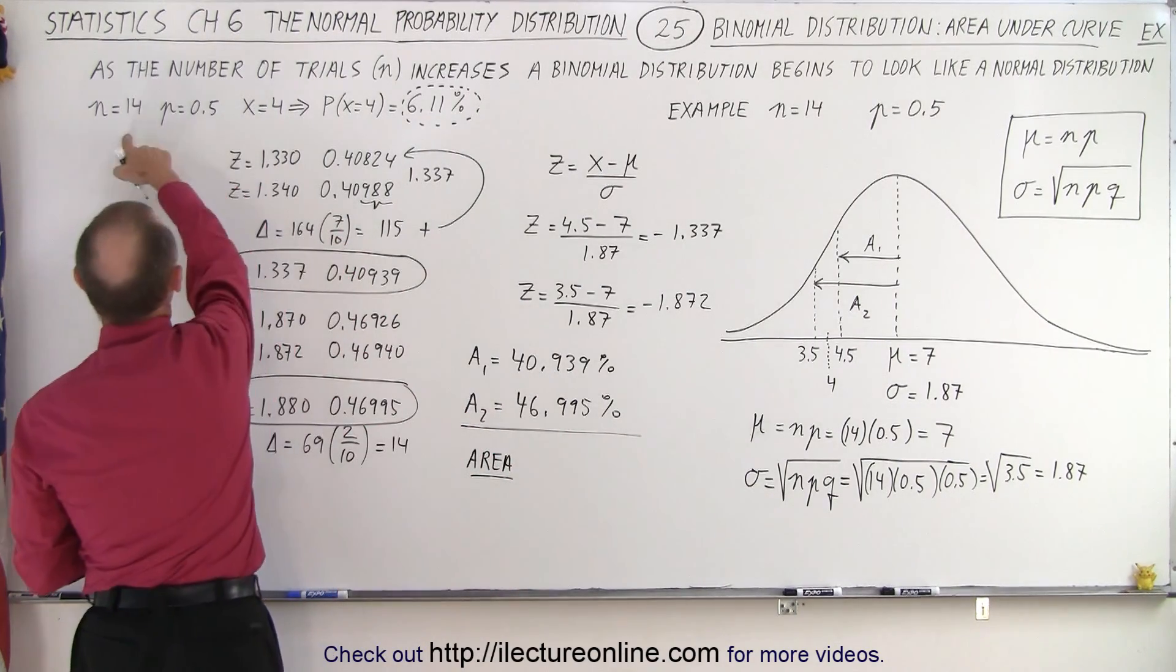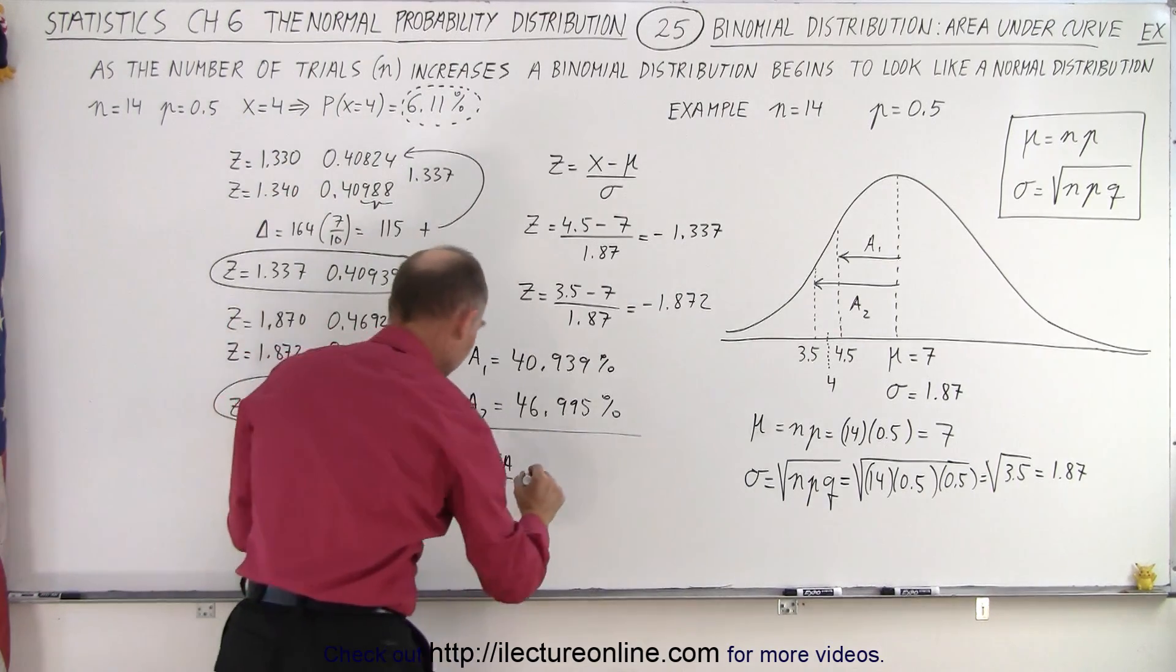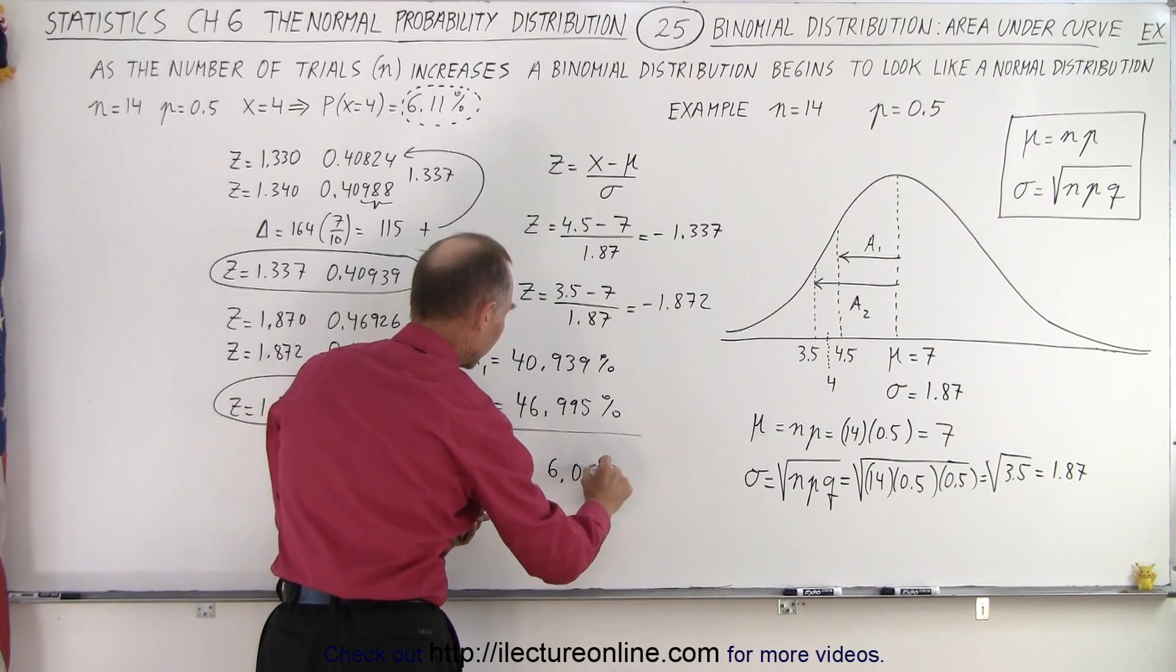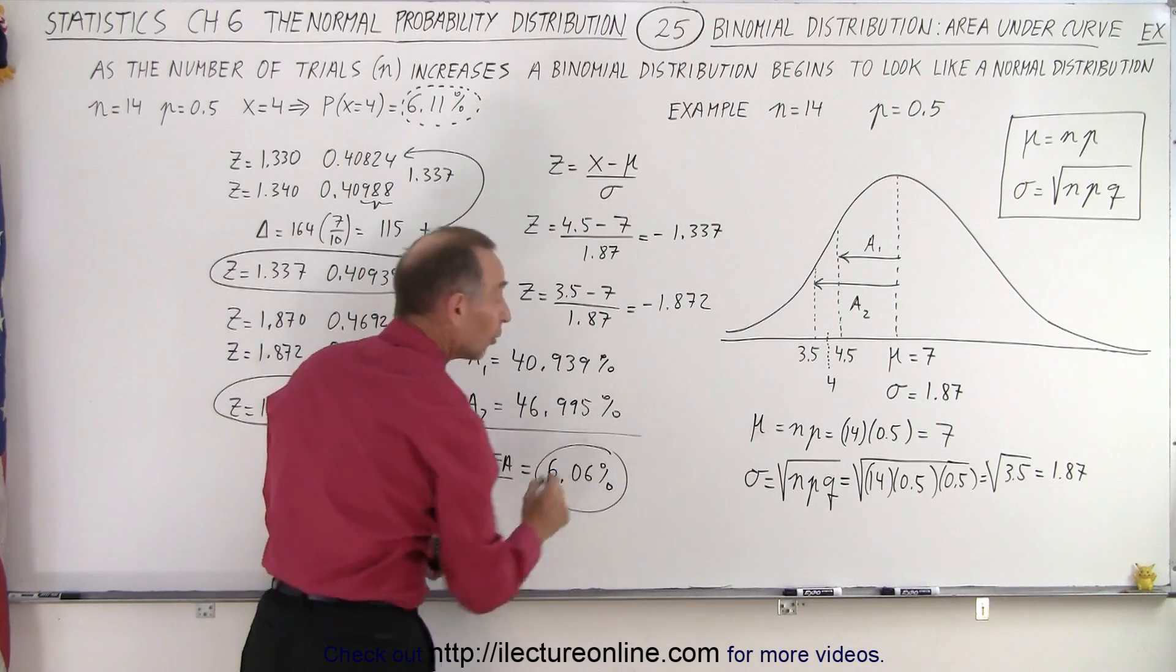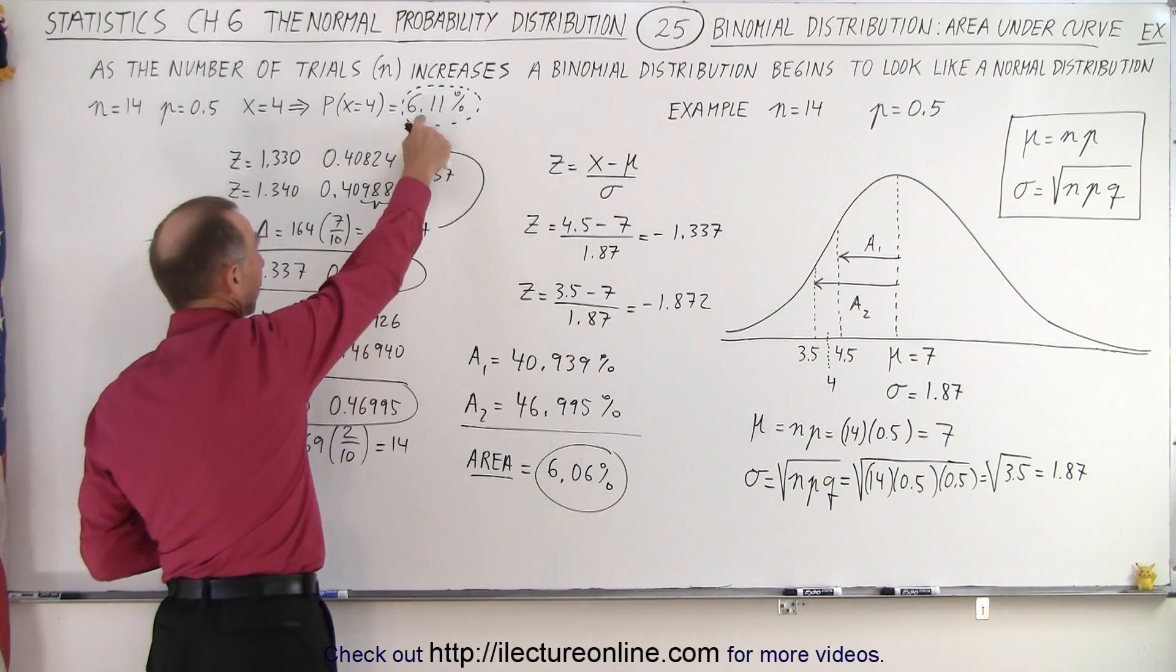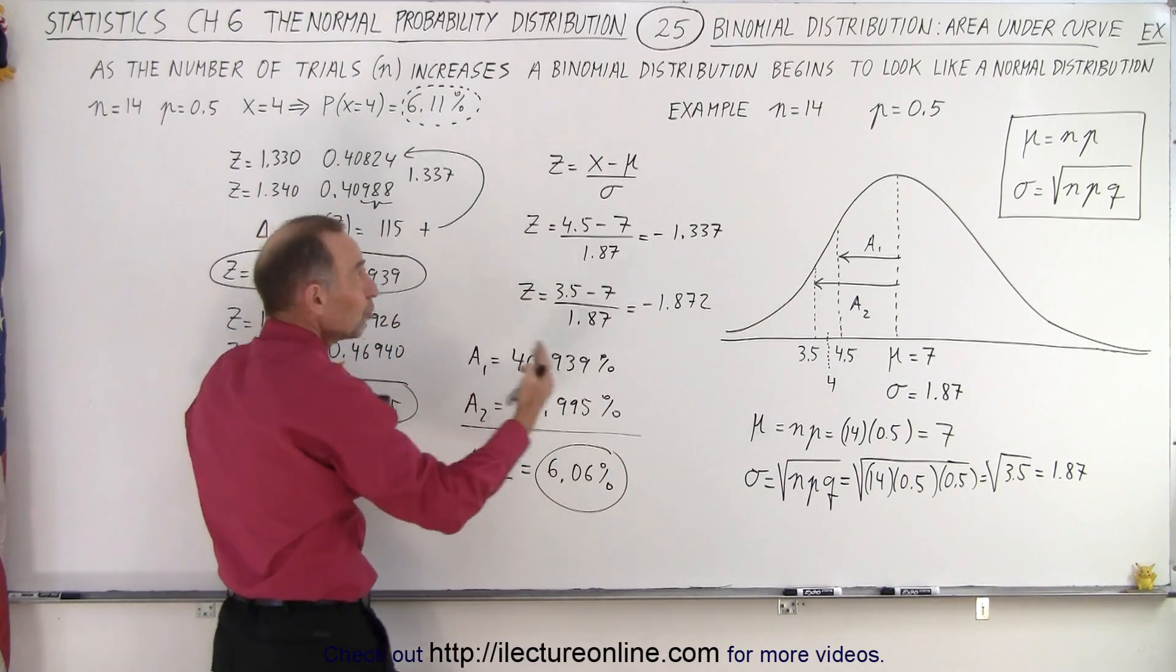That is equal to 6.06%. Now notice how close we got. The actual number is 6.11%, our approximation using a very small number of trials being 14 is 6.06%. We almost got the same result using the techniques of the normal distribution versus using the techniques of the binomial distribution.